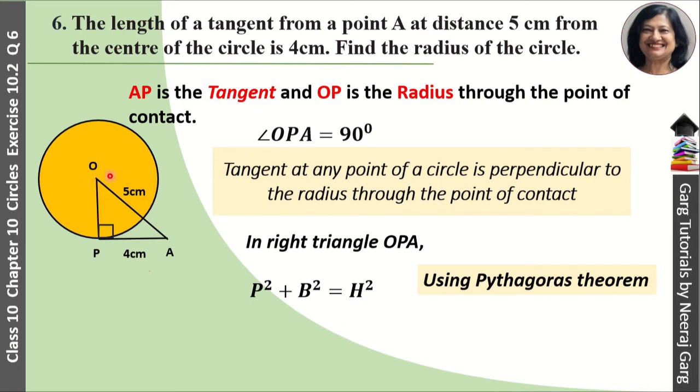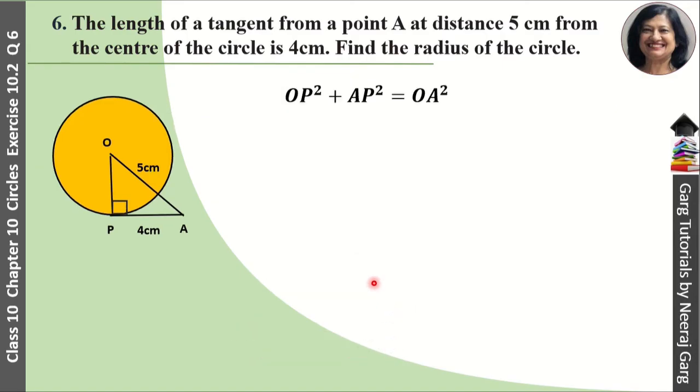Ab is triangle ke anndar perpendicular kya ho ga? Dekho. AP ho ga, ye ho ga base. OP ho ga, perpendicular. Aur 90 degree ke angle ke saamne wali jo ho ga, wo ho ga hypotenuse. Matlab humare paas a gaya OP square plus AP square that is equal to OA square.